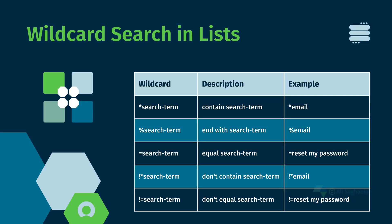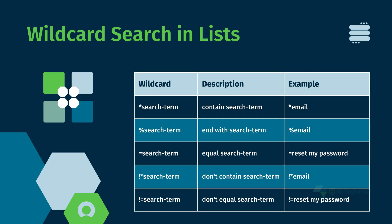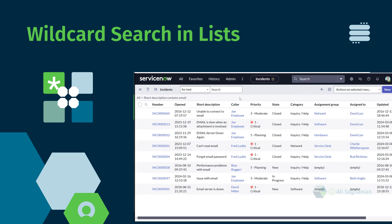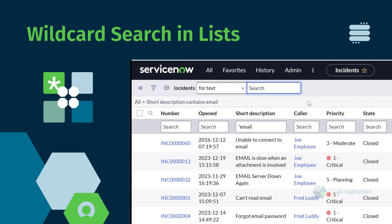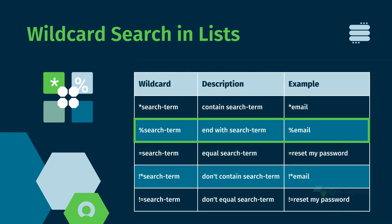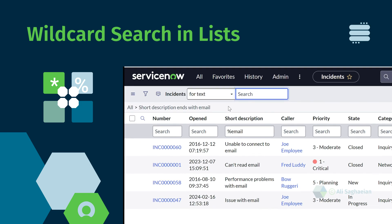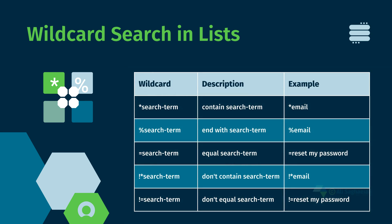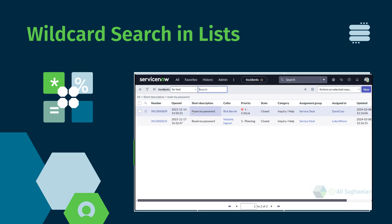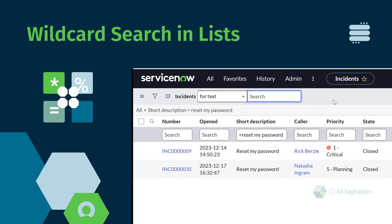ServiceNow supports several wildcard characters to expand and refine search results. Here are the available list search wildcards. You can use an asterisk with a search term to search for values that contain that search term. Starting with a % sign searches for values that end with that search term. Starting with an equal sign searches for values that exactly equal that search term.